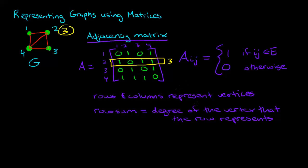Since columns also represent vertices, the same is true for the column sum. If you look at the column that represents the vertex 2, you will also get a 3, which represents its degree.